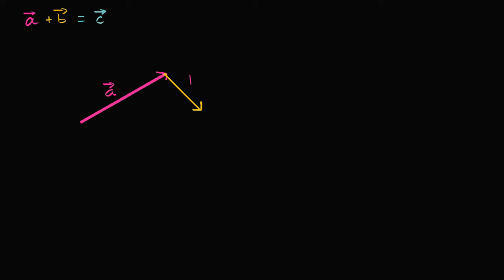And I did that so that I could figure out what the sum is, what vector C is going to be. So that is vector B. And what would that be? Well, we would start at the initial point of vector A, and then go to the terminal point of vector B. So this right over there would be the sum. So that would be vector C right over there.